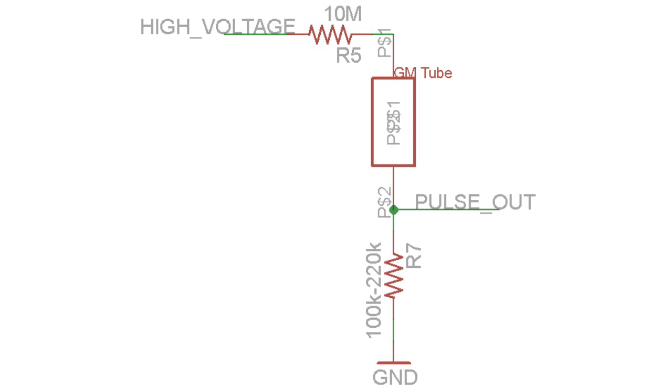When a particle of radiation enters the Geiger-Muller tube, it ionizes the gas inside of it, allowing the high voltage to shoot through from the anode to the cathode. When this occurs, an electrical pulse can be detected between the cathode of the Geiger-Muller tube and the resistor.